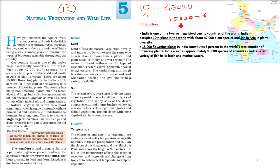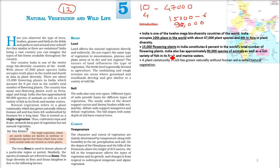India has approximately 90,000 species of different animals — see how rich we are. We also have different types of fish, whether freshwater fish or marine water fish.